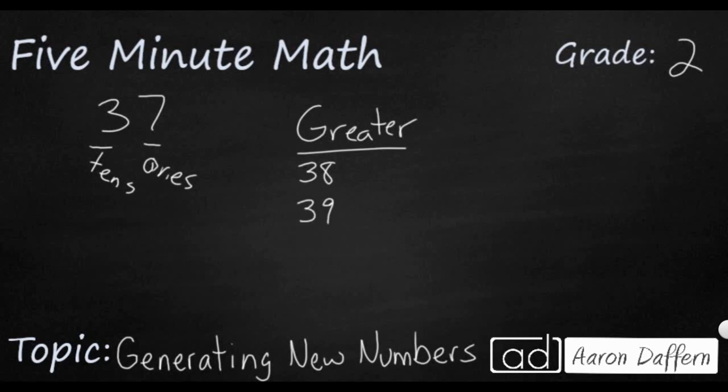I can say it's 38 and I can also say it's 39. So those are the two numbers that I can make that are greater than 37 that have the 3 in the tens place.